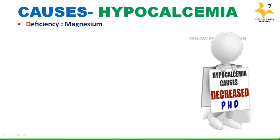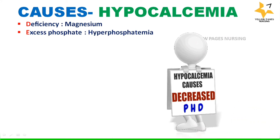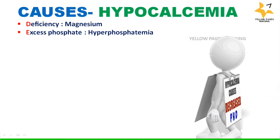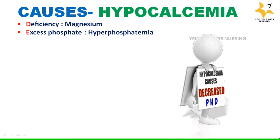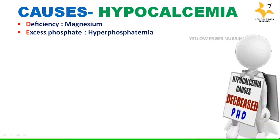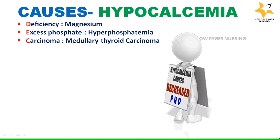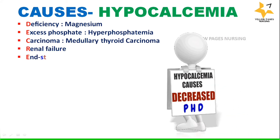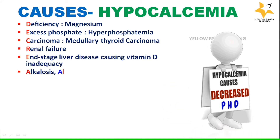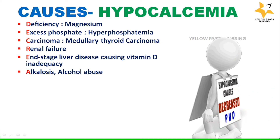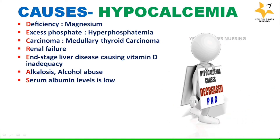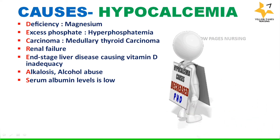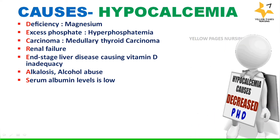Other causes include excess phosphate — hyperphosphatemia — where phosphate binds with calcium avidly and results in acute hypocalcemia. Additional causes are medullary thyroid carcinoma, renal failure, end-stage liver disease causing vitamin D inadequacy, and alcoholosis due to alcohol abuse. Severe respiratory alkalosis may result in binding of calcium to albumin and can reduce the fraction of ionized calcium in the blood.